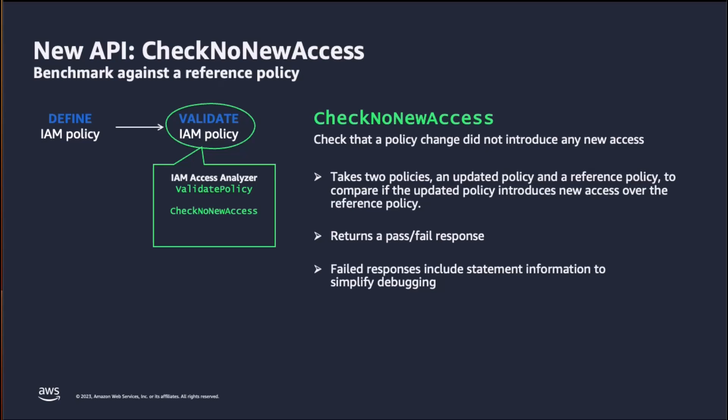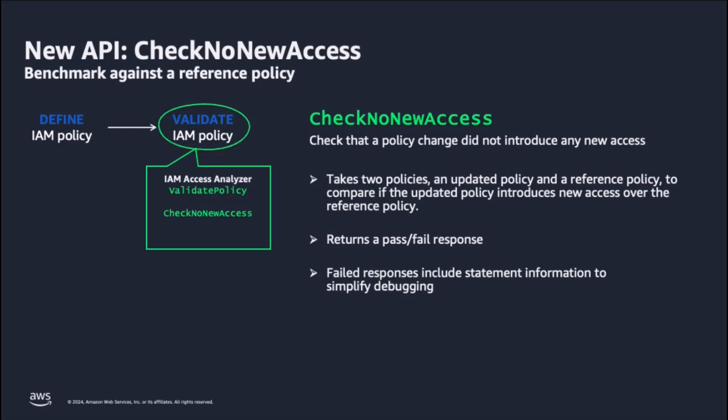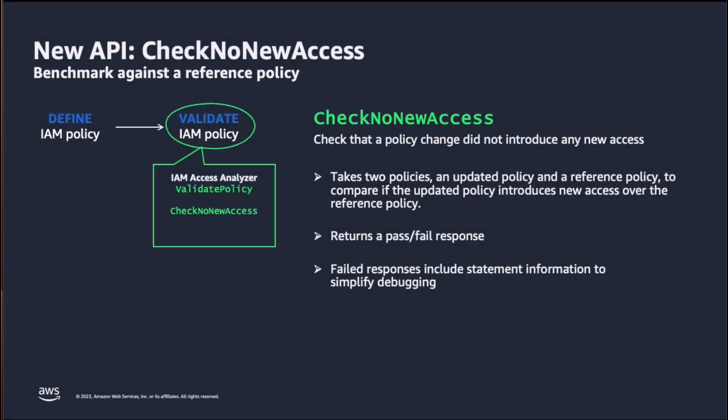Alternatively, security teams or application architects may define soft security permission boundaries for application access. For example, there may be a sensitive resource that you want to restrict access to certain principals, and you can define a reference policy that restricts access to sensitive resources. Please note that reference policies are intended to be used in policy checks only and should not be used for access control. Let's see this in action.